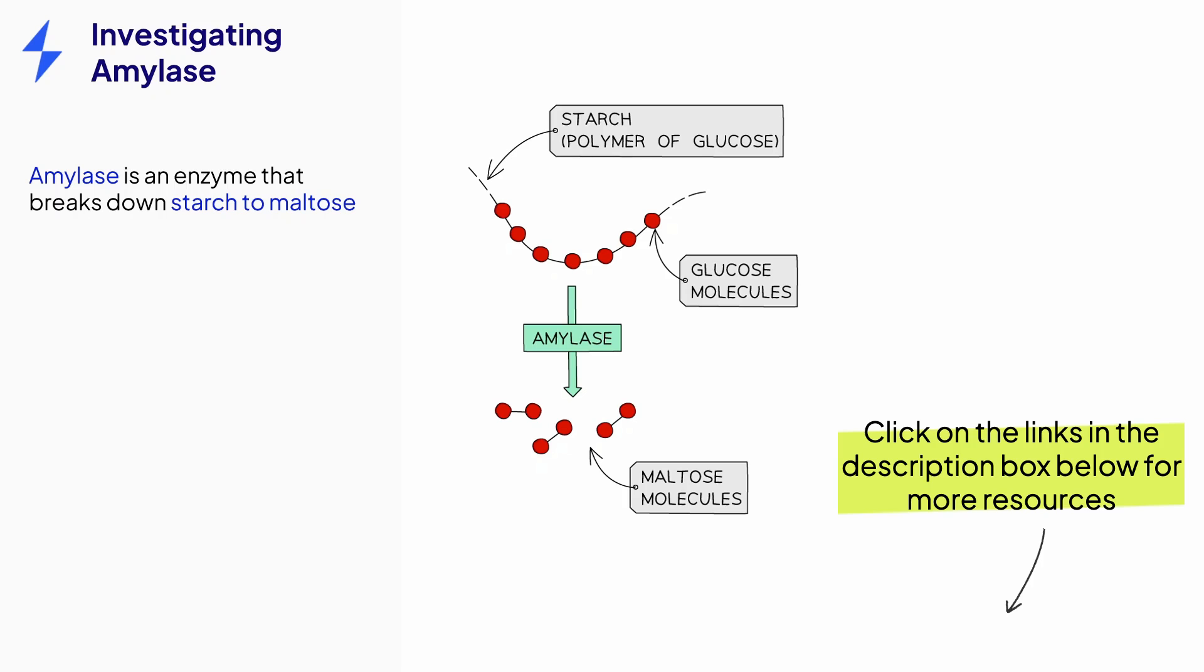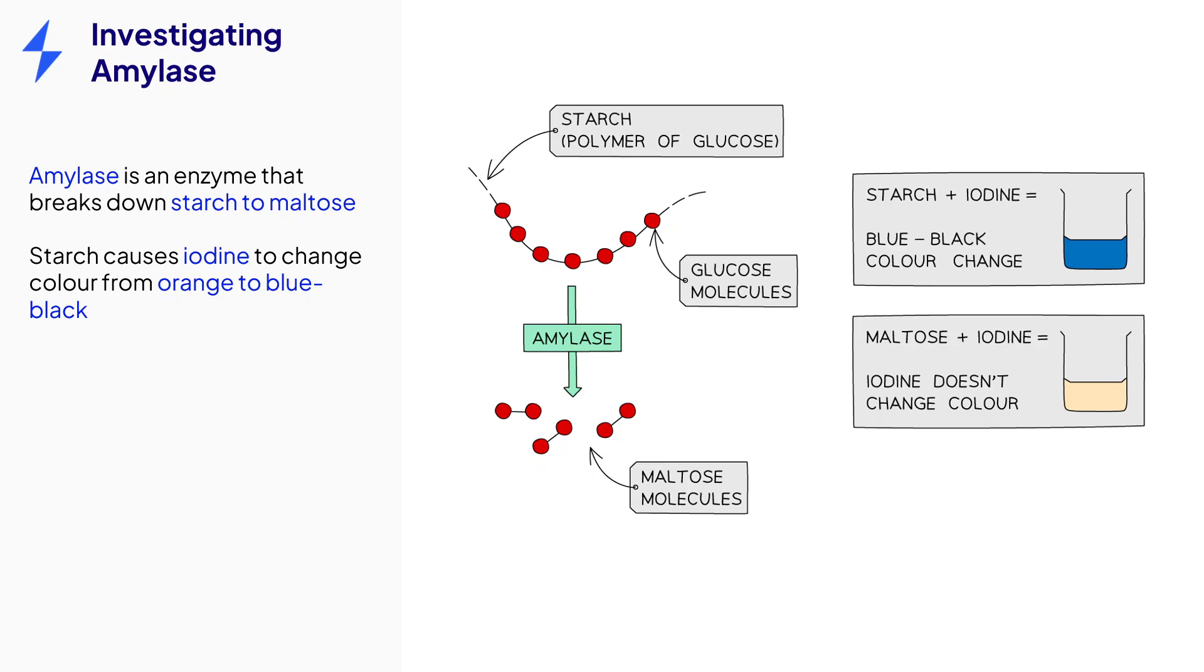In these experiments, we use the enzyme amylase, which breaks down the substrate starch into a type of sugar called maltose. We use an indicator called iodine to test for the presence of starch. When the amylase has not yet broken down all the starch, it will cause the starch to turn the iodine blue-black.